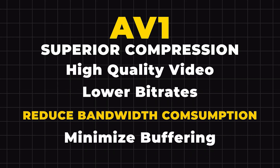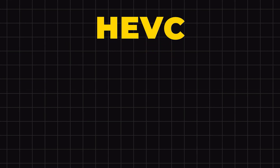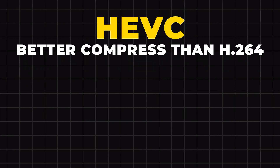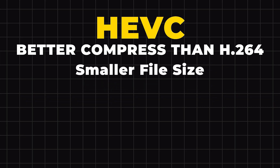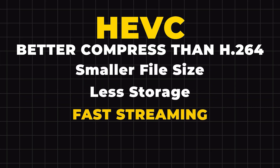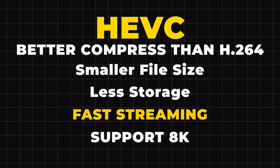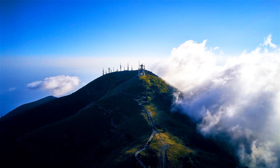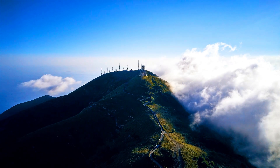The HEVC encoder provides significantly better compression than H.264, leading to smaller file sizes, reduced storage requirements, and faster streaming capabilities. It supports resolutions of up to 8K, which is advantageous for streaming high-resolution videos over limited bandwidth.